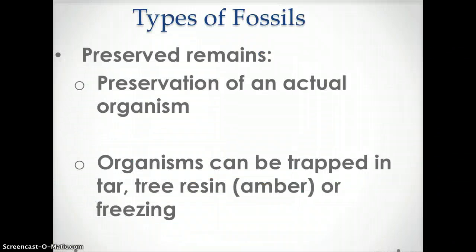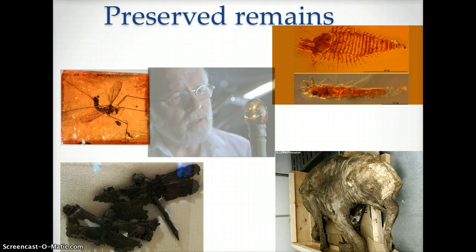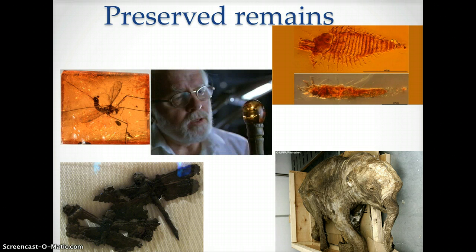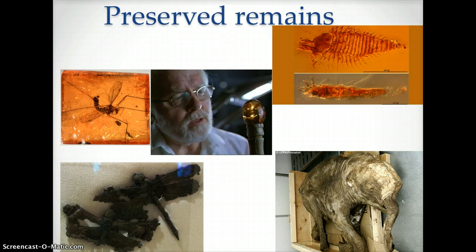Preserved remains is the preservation of the actual organism. This happens when an organism is trapped in tar, tree resin — which is later called amber — or gets frozen. The top three images show organisms preserved in amber. The middle image is from the movie Jurassic Park; in the movie, they use the blood from a mosquito trapped in amber to get dinosaur DNA. The bottom left image shows insects fossilized in tar, and the bottom right image shows a frozen woolly mammoth.